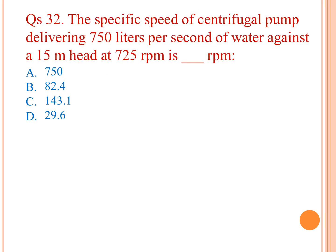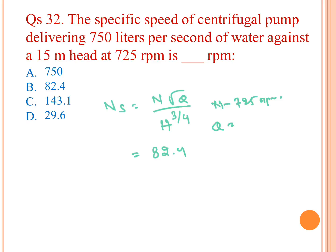The specific speed of a centrifugal pump delivering 750 liters per second of water at a 15-meter head at 725 RPM is how many RPM? For a pump, specific speed is N·√Q divided by H to the power 3/4. Putting in the values: N = 725 RPM, Q = 750/1000 = 0.75 m³/s, H = 15 m (manometric head). The answer comes out to 82.4. So B is the answer.